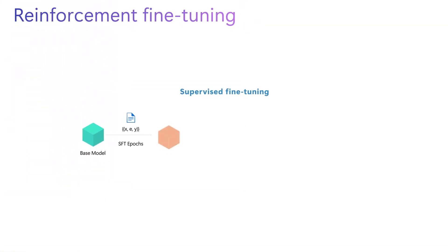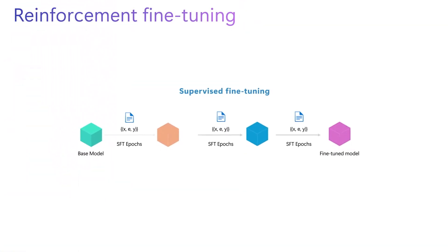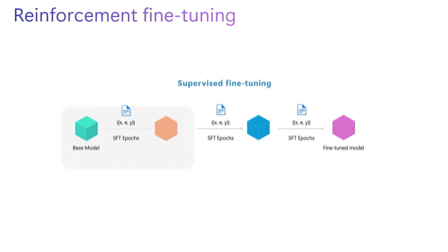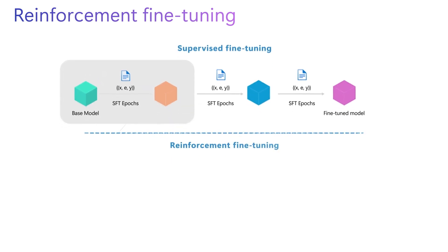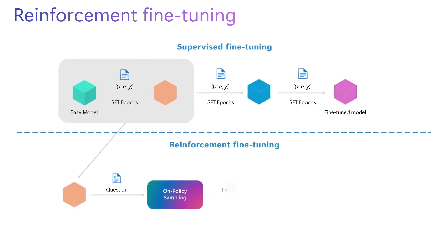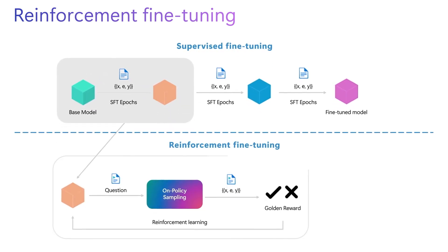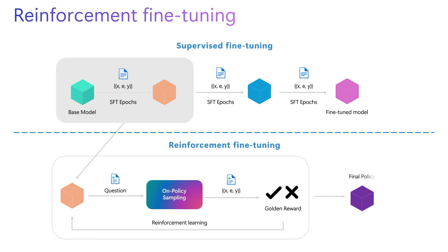Supervised fine-tuning relies on thousands of labeled examples to teach models to replicate input data, making it effective for steering tone and style, but not for improving reasoning. In contrast, reinforcement fine-tuning enhances a model's ability to reason in new domains by rewarding correct reasoning and penalizing mistakes.